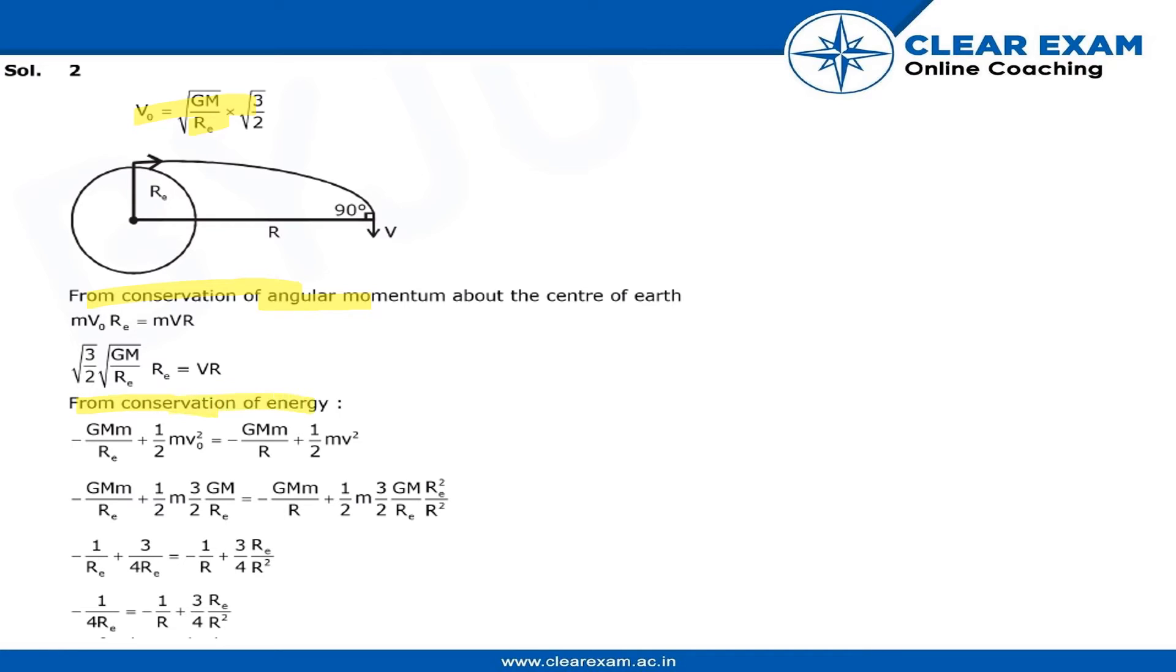of energy, so it will be minus GM by RE plus half MV0 square is equal to minus GM upon R plus half MV square. So substitute the value of V0 here and some of the terms are getting cancelled